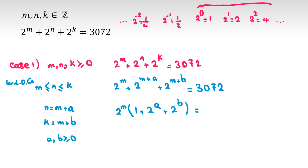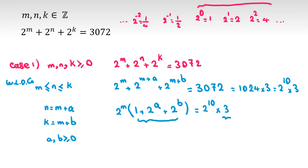If I factorize 3072, it will be 1024 times 3, which is 2 to the power of 10 times 3. So it is 2 to the power of 10 times 3. Now, if this part (1 plus 2^a plus 2^b) is an odd number, it can only be 3. And because n ≤ k, we have m+a ≤ m+b, so a ≤ b.